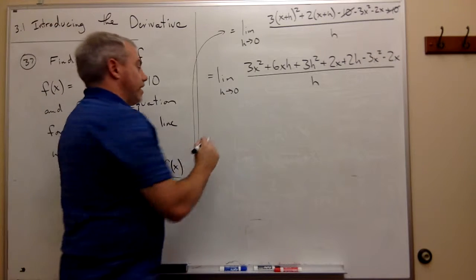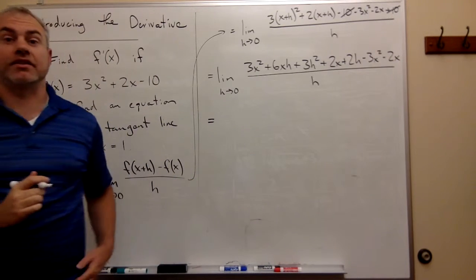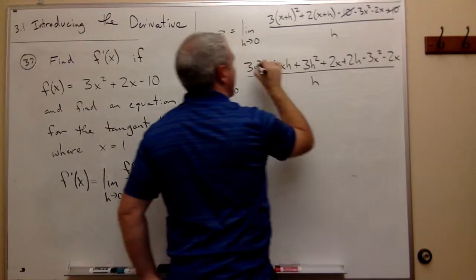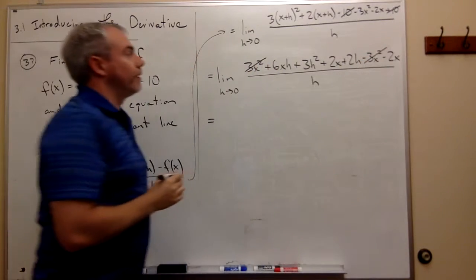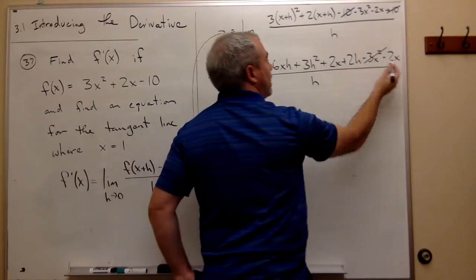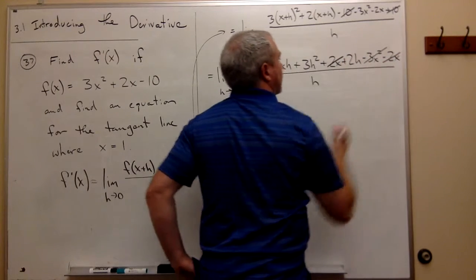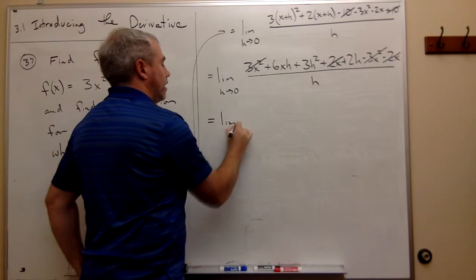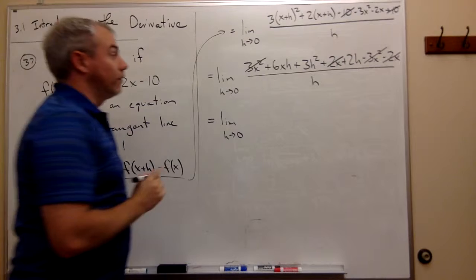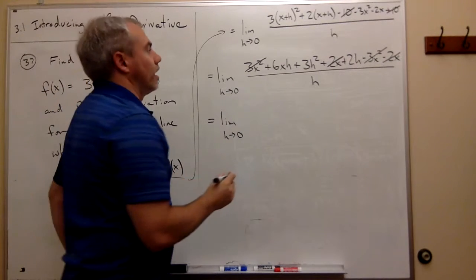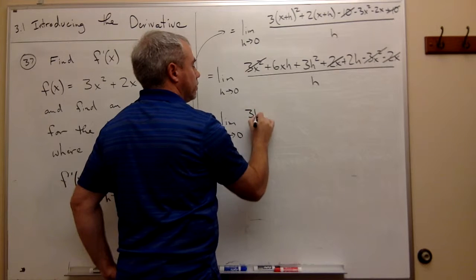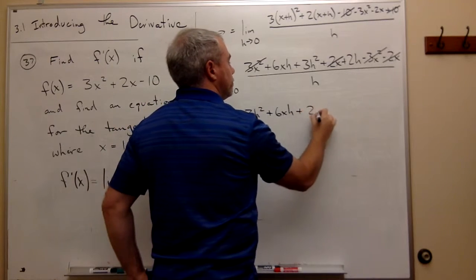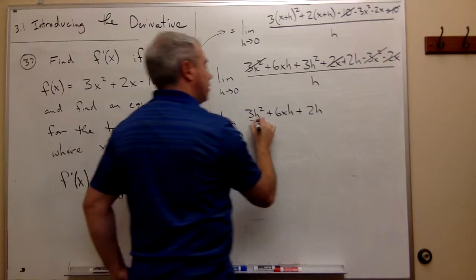Now some cancellation happens on the top. I have a positive 3x² and a negative 3x², so I can get rid of those. I've got a positive 2x and negative 2x, so I can get rid of those. Let's see what's left: the limit as h goes to 0 of 3h² + 6xh + 2h all over h.